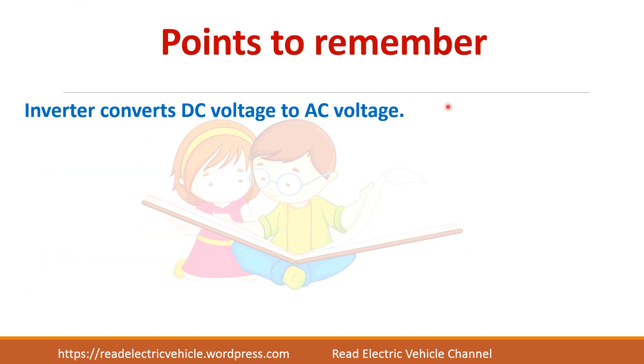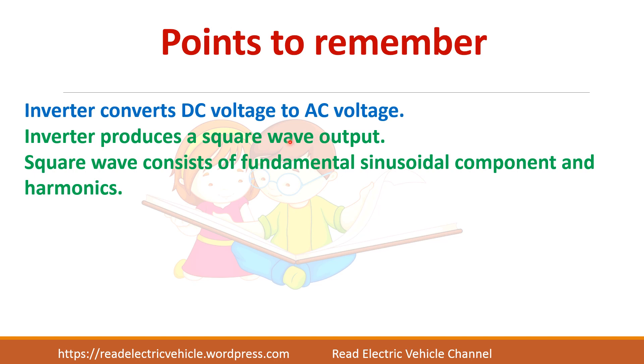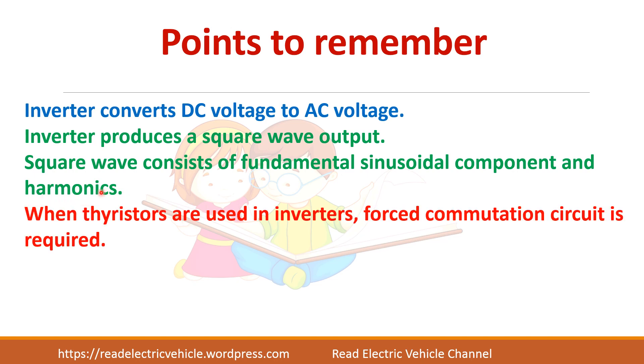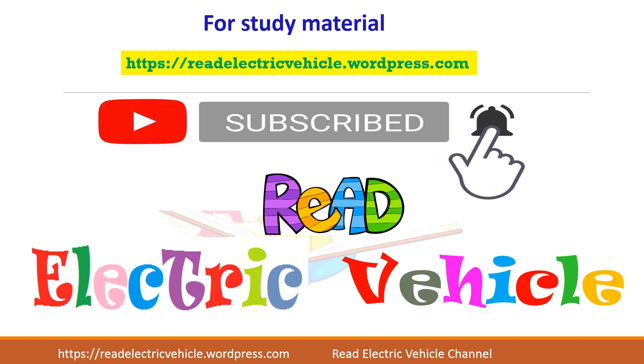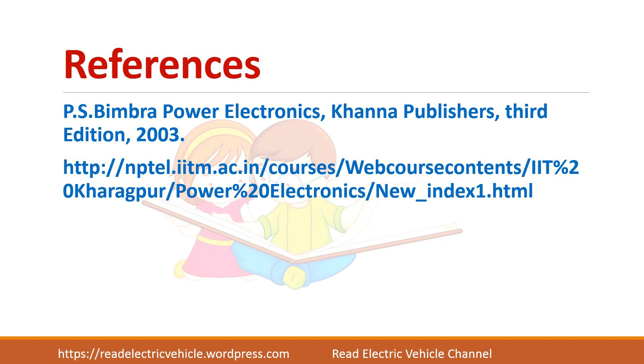The points to remember here are: inverter converts DC to AC and it produces a square wave output, and this square wave consists of a fundamental component and harmonics. You have to remove the harmonics using some filter or pulse width modulation technique. When thyristors are used you have to use a forced commutation circuit, or else you can use BJT or MOSFET. Always connect a diode in anti-parallel for non-resistive loads. If you want the study material you can visit this website and if you like the video do subscribe to READ Electric Vehicle channel. These are some of the references. Thank you.